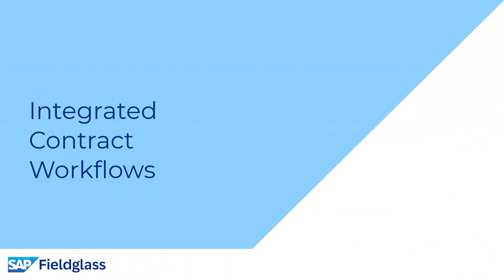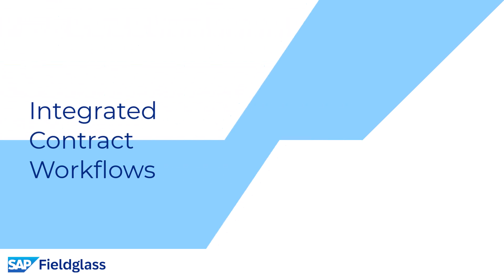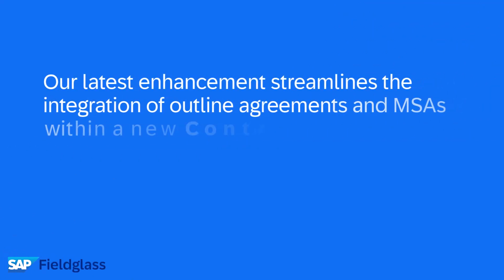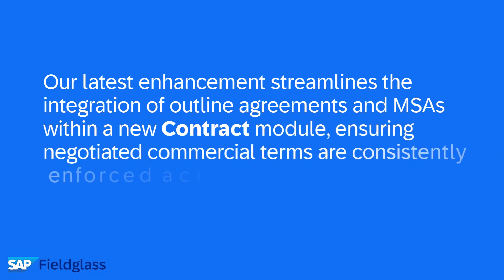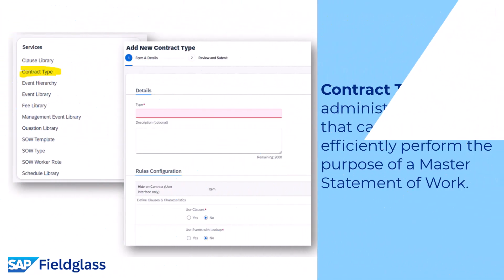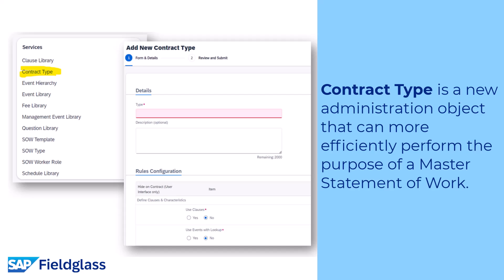Next, we have integrated contract workflows. Our latest enhancement streamlines the integration of outline agreements and MSAs within a new contract module, ensuring negotiated commercial terms are consistently enforced across procurement and payable processes. Contract type for integrated contracts is a new administration object that can more efficiently perform the purpose of a master statement of work.